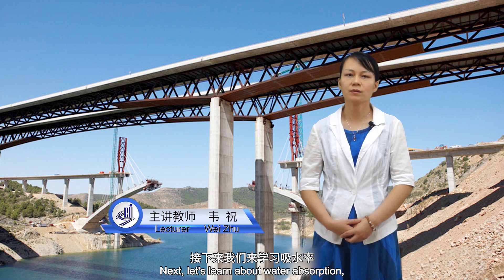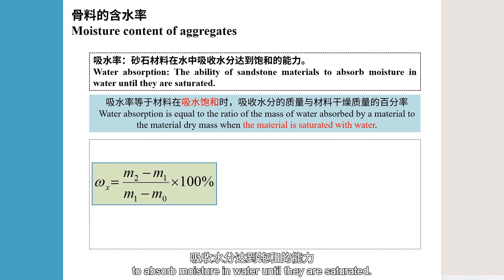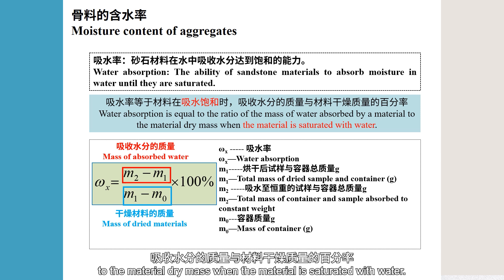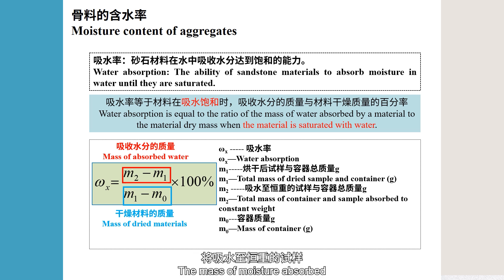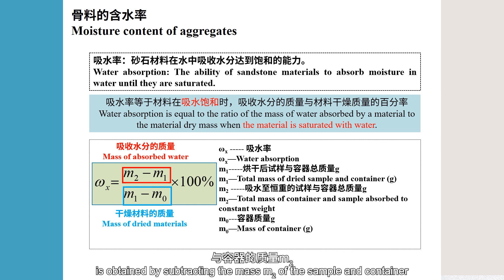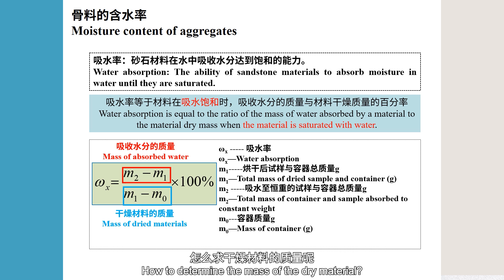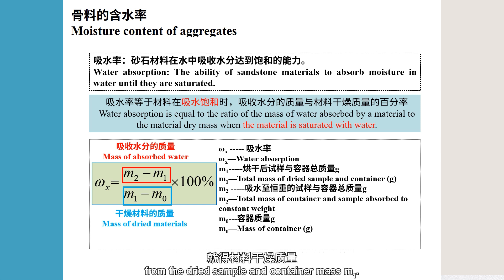Next, let's learn about water absorption, which refers to the ability of sandstone materials to absorb moisture in water until they are saturated. Water absorption is equal to the ratio of the mass of water absorbed by a material to the material dry mass when the material is saturated with water. We use omega-x (ω-x) to represent water absorption. The mass of moisture absorbed is obtained by subtracting the dried sample mass from the mass of the sample and container after water absorption to constant weight. The dry mass is obtained by subtracting the container mass m0 from the dried sample and container mass m1.